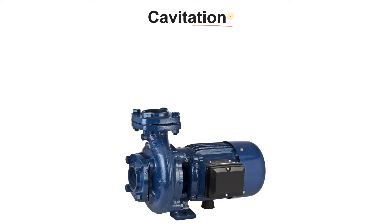We have already discussed cavitation in our previous videos — the science behind it, prevention, and there are four or five videos about cavitation you can watch. In short, cavitation occurs in a centrifugal pump where the pressure at the impeller is minimum. If the pressure of the liquid at that temperature goes below the vapor pressure of that liquid at that temperature, boiling will occur.